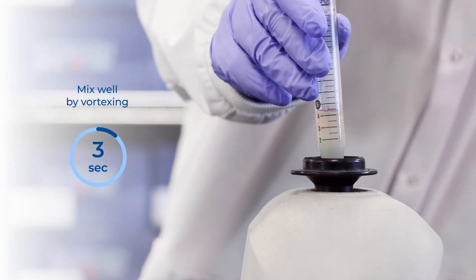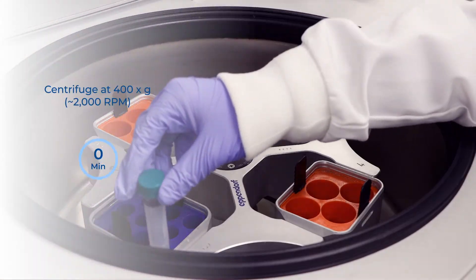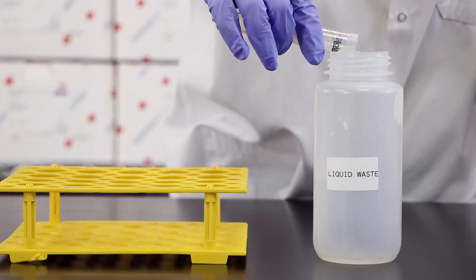Mix well by vortexing for 10 seconds. Centrifuge for 2 minutes at 2000 RPM. Discard the supernatant.